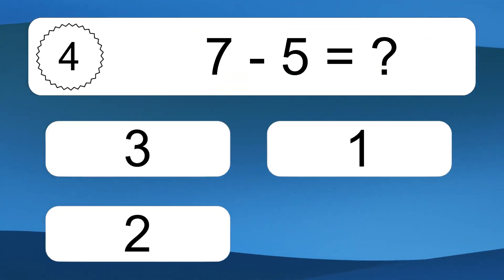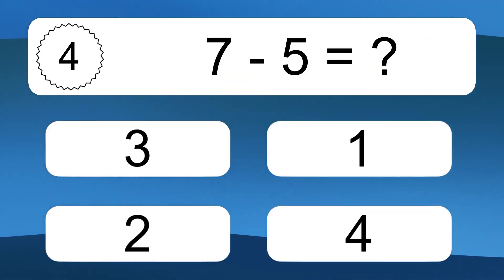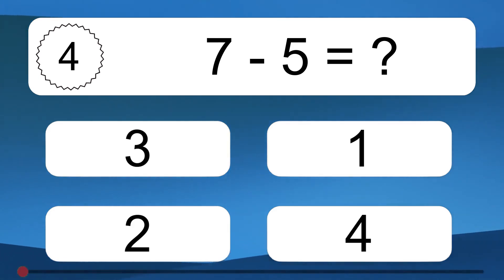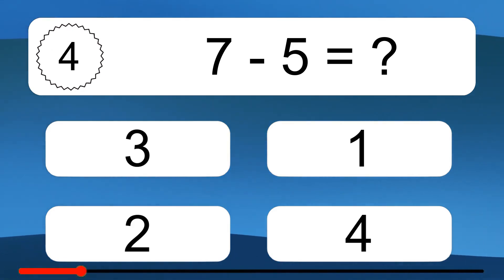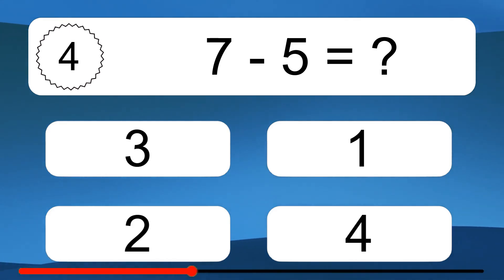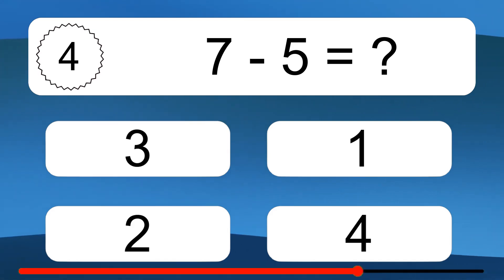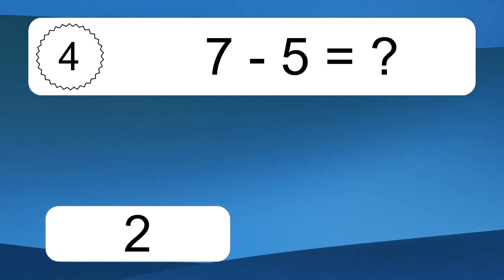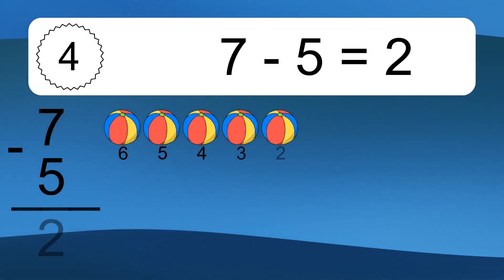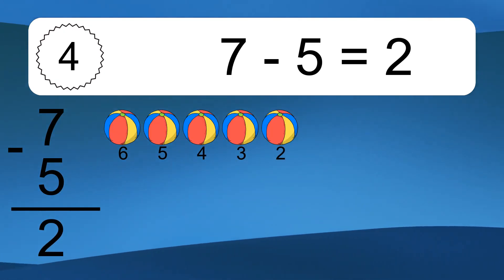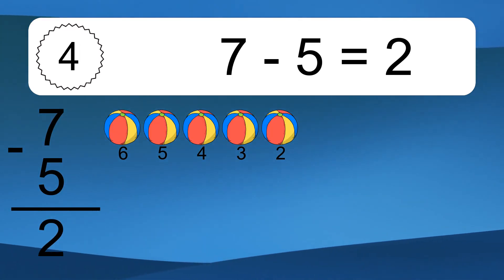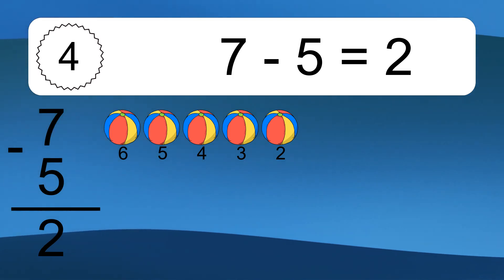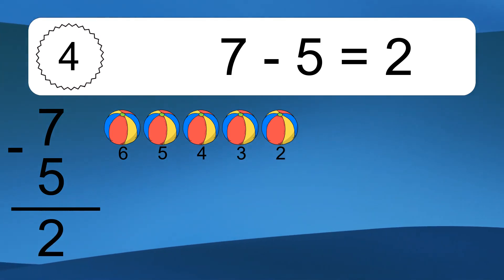7 minus 5 equals what? 7 minus 5 equals 2. Let's count it: 6, 5, 4, 3, 2.